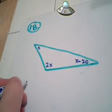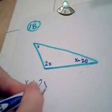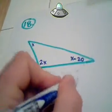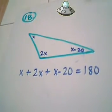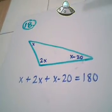So if I take x and I add it to 2x and I add that to x minus 20, I'm going to get 180. This is true for any triangle. Very important fact to know, to work this problem especially.